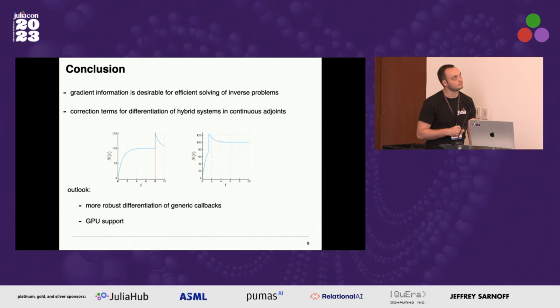This brings me to the end. Gradient information is important for our optimization tasks. In the future, we want to do more robust differentiation of generic callback types. Thanks.